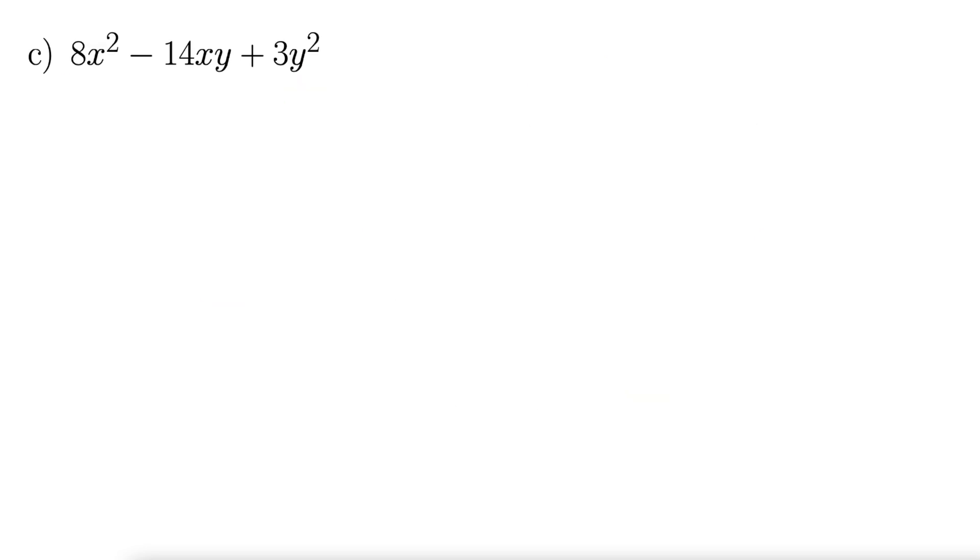This example is 8x squared minus 14xy plus 3y squared. So I think what I'm going to do here is just factor the version without the y's and then add in the y's at the very end. So let's just factor 8x squared minus 14x plus 3. And then once we have this factored, we'll just add the y's back in. Here we go. Let's do our cross here. AC goes in the top. So here's A, B, and C. Just the coefficients, not the x's.